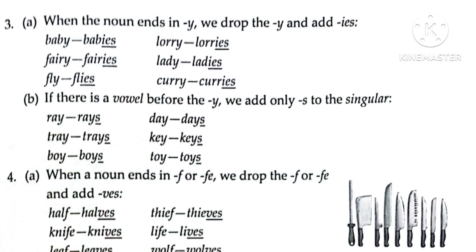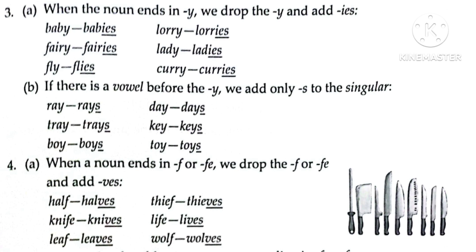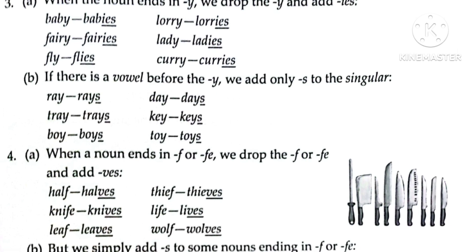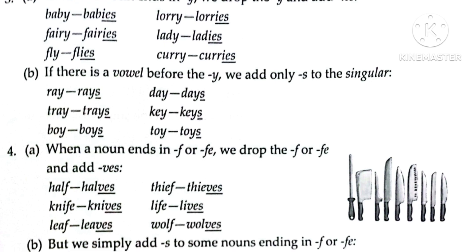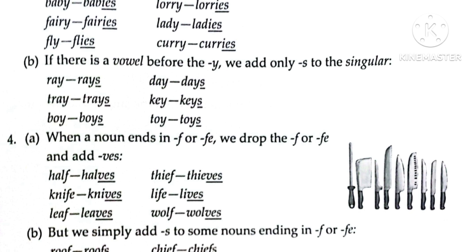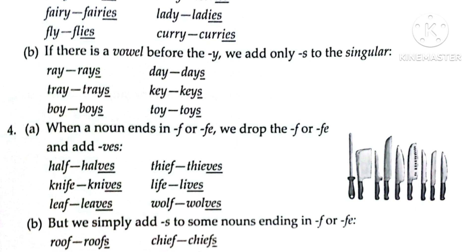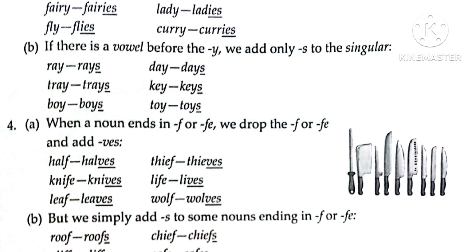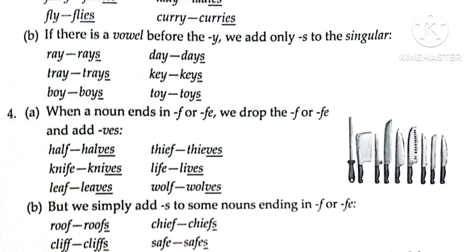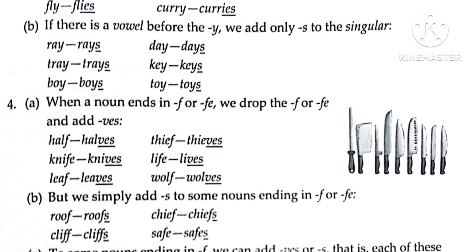Part B: if there is a vowel before the Y, we add only S to the singular — a simple way to form the plural. For example, 'ray' has 'a' before Y, which is a vowel, so we simply add S: ray → rays. Similarly: day → days, tray → trays, key → keys, boy → boys, toy → toys. In all these words, the common thing is that there is a vowel before the Y.